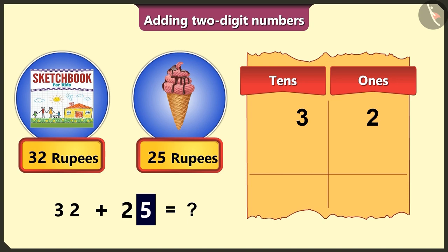From 25, number 5 comes last, so 5 in the ones box. And 2 comes first, so we will write it in the tens box.